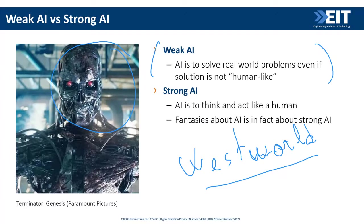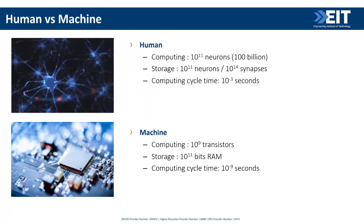We haven't yet reached complete human intelligence, but it doesn't mean we won't get there. This is why some people are worried — because the day you create a system able to do everything we do, and better, it might be dangerous to us.